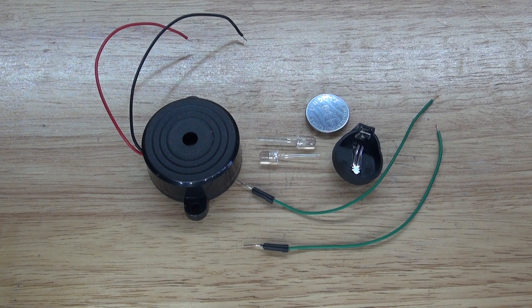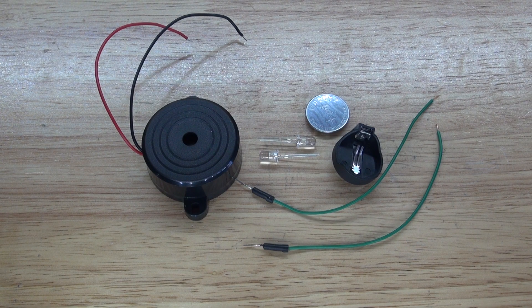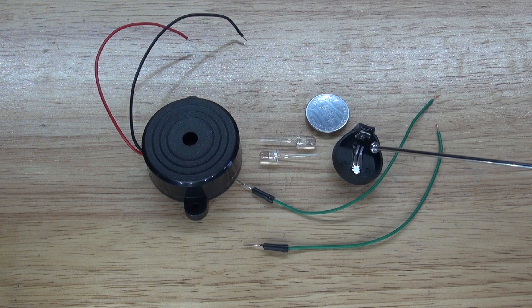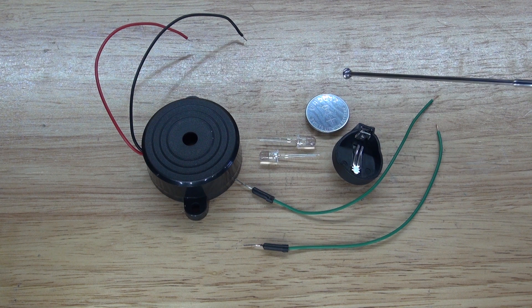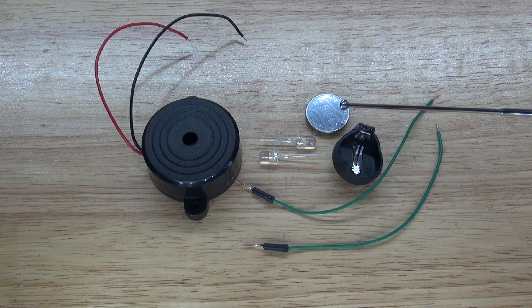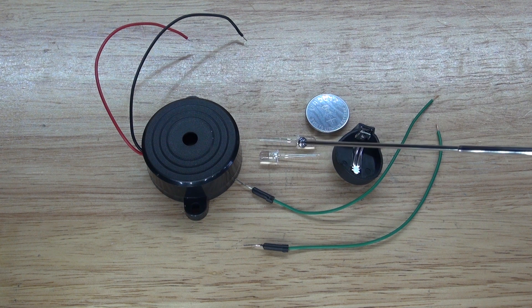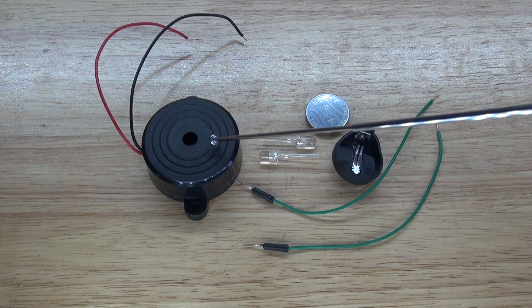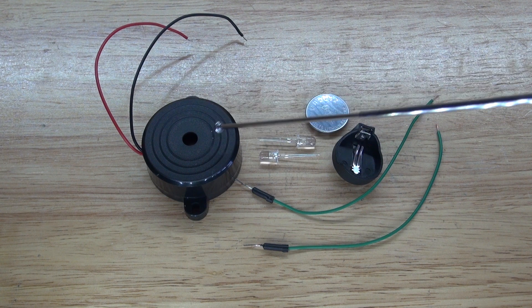And these are the items you're going to need to make this device. The items you're going to need are these modified jumper cables, a 3 volt button cell battery holder, a 3 volt button cell battery, two LEDs of the color of your choice, and of course an active buzzer. Now let's go ahead and assemble this device and let's get started.